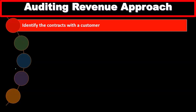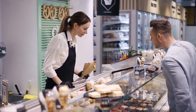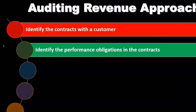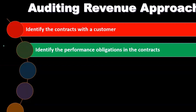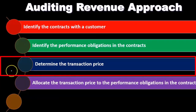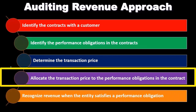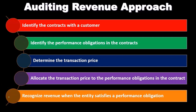In the auditing of revenue, within the auditing process we're going to have to understand the business — what is it that they do to generate revenue. We're going to identify the contract with the customers and what kind of contract is involved — goods, services, or some combination. We identify the performance obligations in the contract, determine the transaction price, allocate the transaction price to the performance obligations, and then recognize revenue when the entity satisfies the performance obligation, which aligns with our revenue recognition principle.